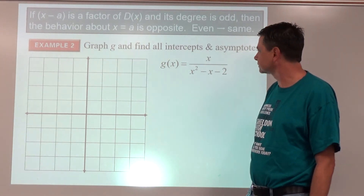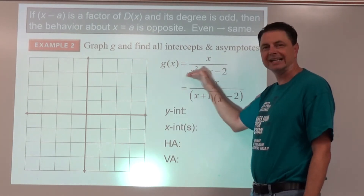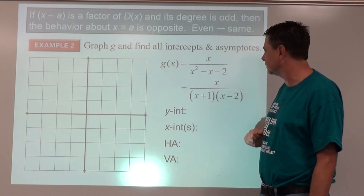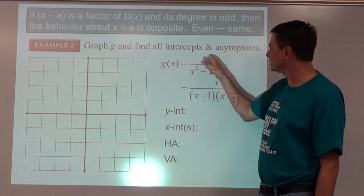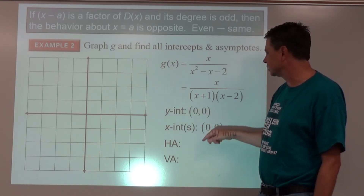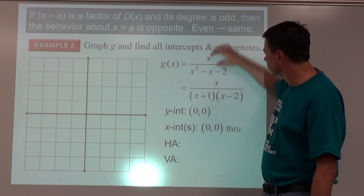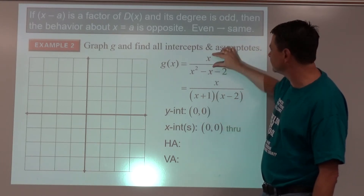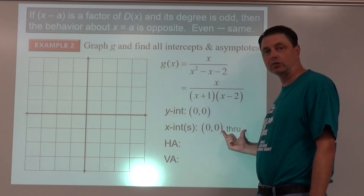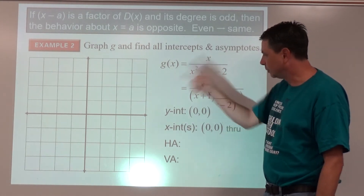Start by factoring the denominator — that's useful for finding vertical asymptotes. Plug in zero for x to find the y-intercept, and we get zero. So the y-intercept is (0, 0) and the x-intercept is also (0, 0). Since the numerator has x to the first power, this x-intercept is a pass-through — the graph crosses the x-axis there rather than bouncing off.